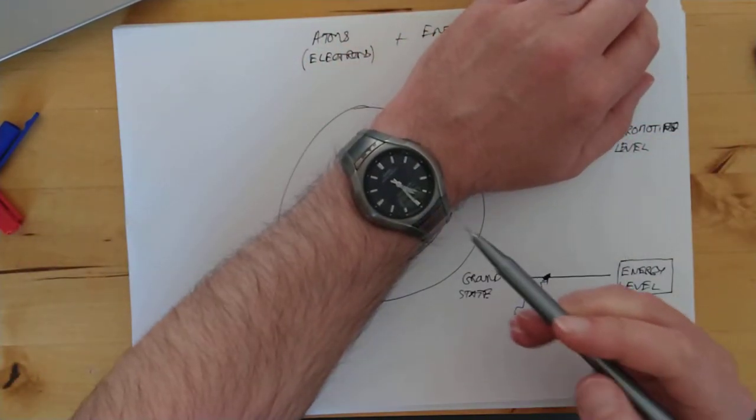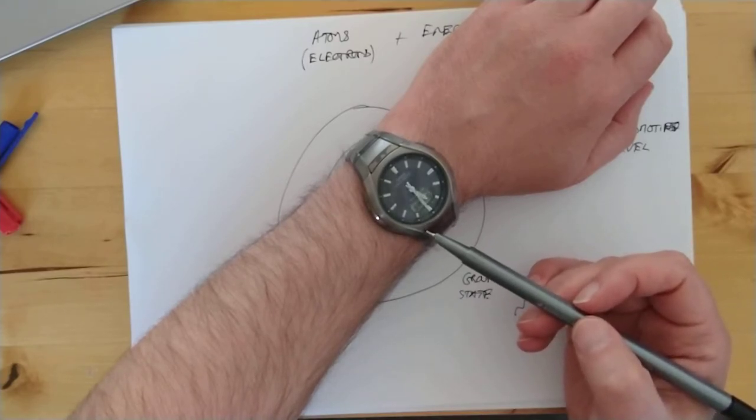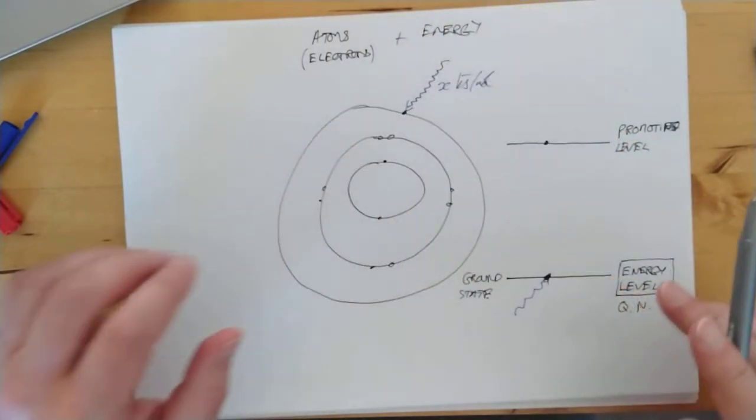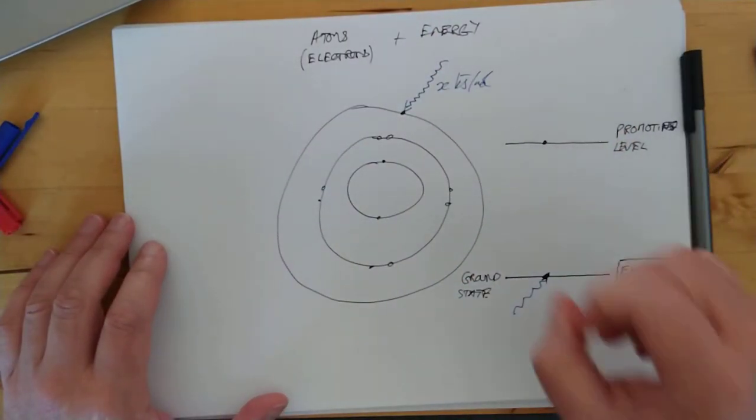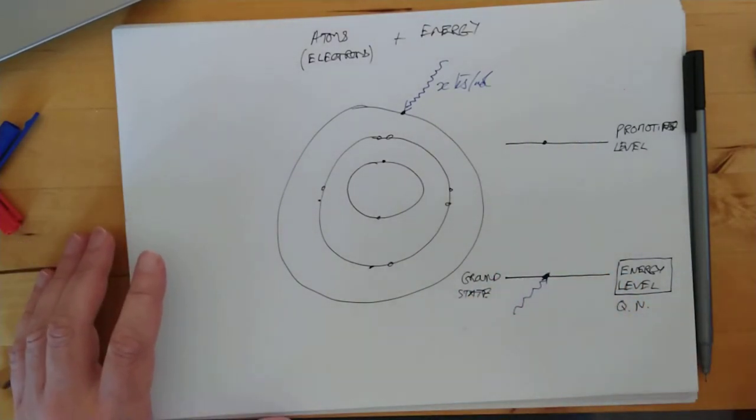A suitable analogy for that would be the second hand on my watch here, which ticks from second to second. It does it quite quickly, but it still sweeps through all the possible positions. A digital watch shows zero, and then one, and then two, and doesn't show any time in between. That's quantization.